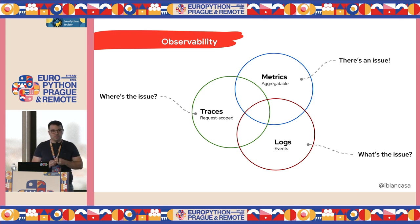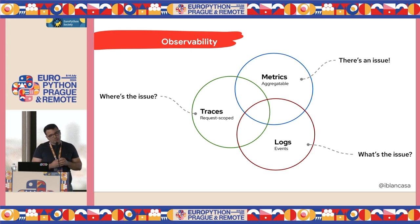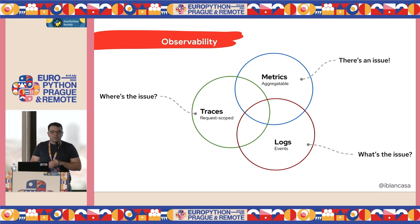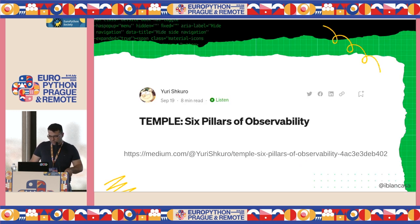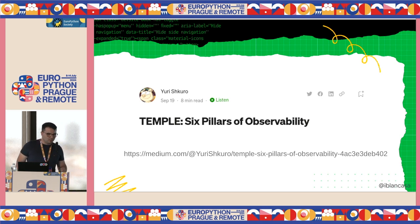People talk a lot about the three pillars. Also, there is one article written by Yuri — I don't remember his surname — that talks about the six pillars of observability. Now people are also talking a lot about profiling, but that is for another talk. The article is pretty interesting and I recommend you to read it.